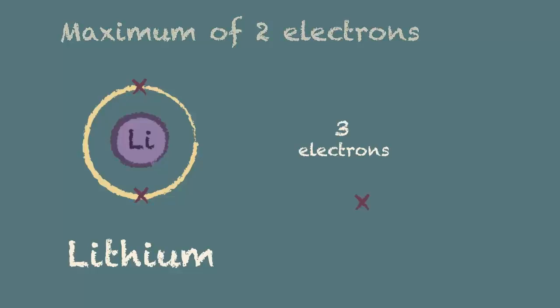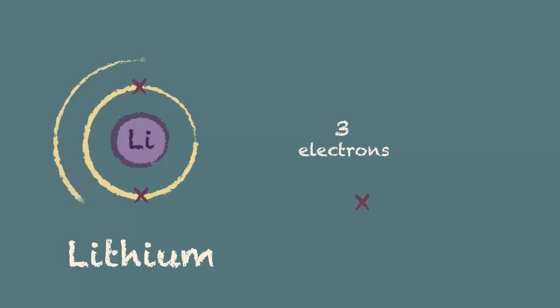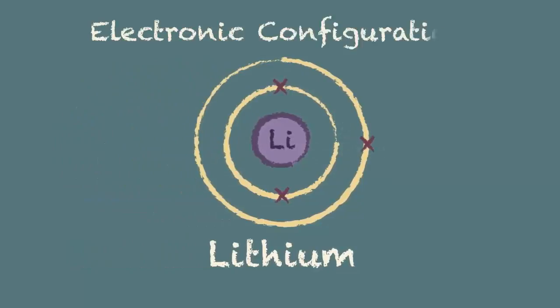The third electron therefore must go into the next shell which we draw as a larger circle around the outside of the first. And that completes the electronic configuration of a lithium atom.